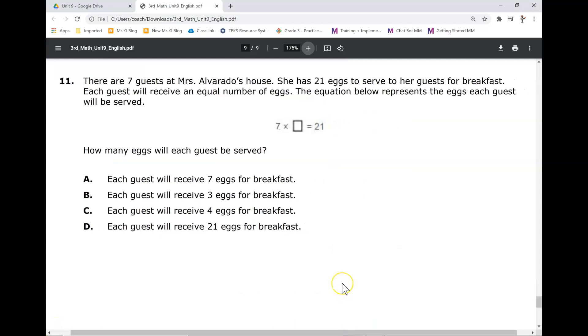Number 11. There are seven guests at Mrs. Alvarado's house. She has 21 eggs to serve to her guests for breakfast. Each guest will receive an equal number of eggs. The equation below represents the eggs each guest will be served. How many eggs will each guest be served? The answers say each guest will receive eggs for breakfast.